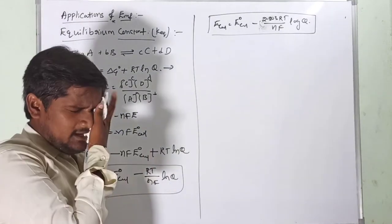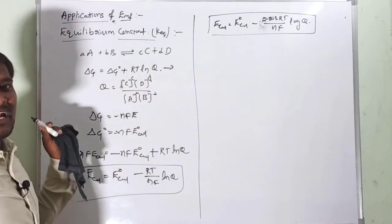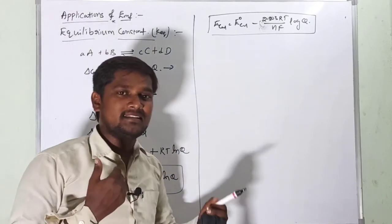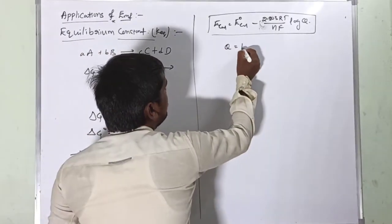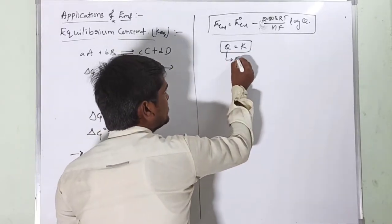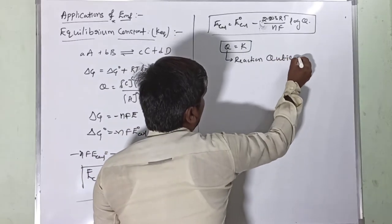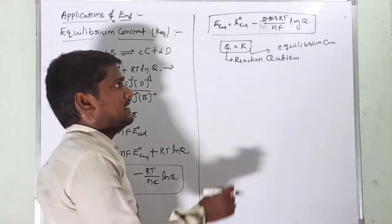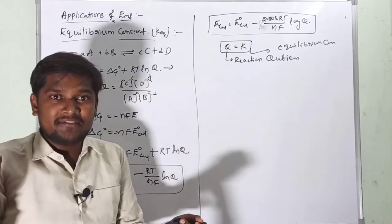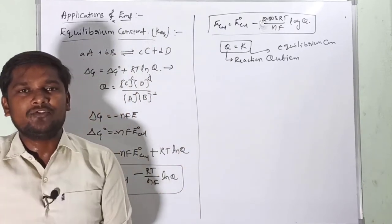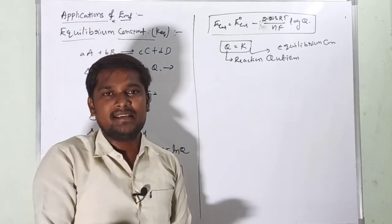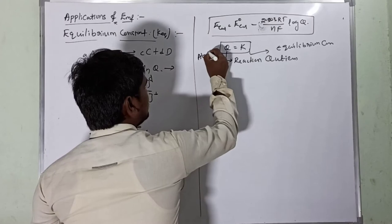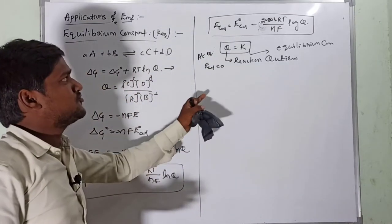Using the Nernst equation, at equilibrium both compartments of the cell have equal electrode potential, so no current flows. At equilibrium the reaction quotient Q equals the equilibrium constant K. When Q = K, there is no potential difference between the two compartments, so E_cell = 0 at equilibrium.